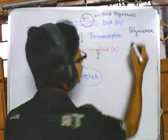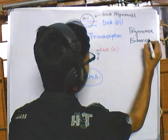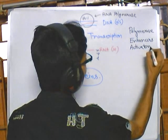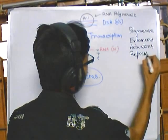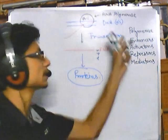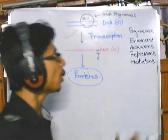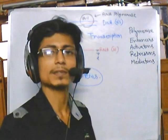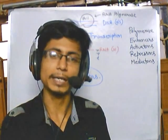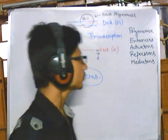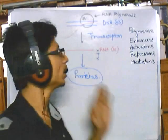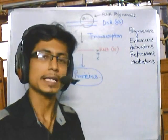In the eukaryotic system, along with polymerase we also have enhancers, activators, repressors, and mediators. Some of these are proteins and some are nucleotide signals. These signals instruct other proteins to attach and give particular signals, all accounting for the production of mRNA from DNA in the eukaryotic system.